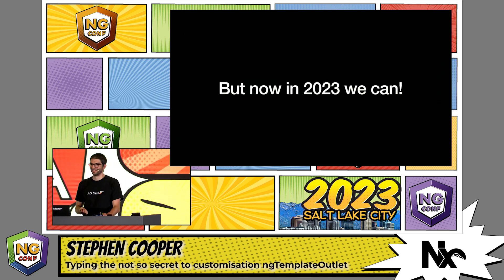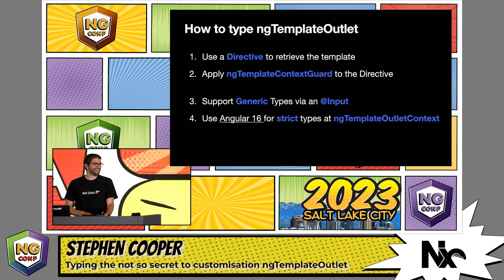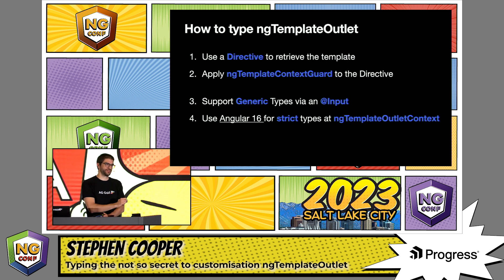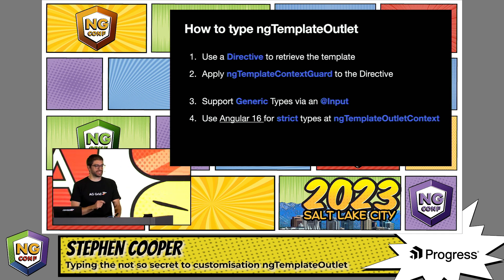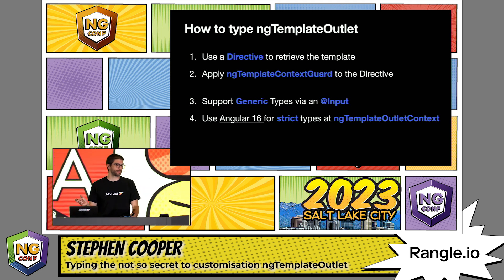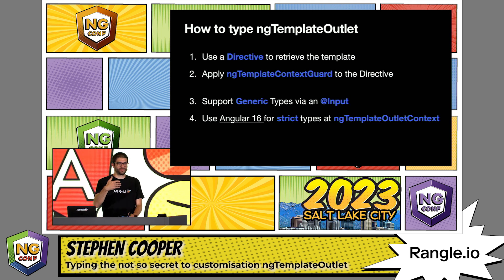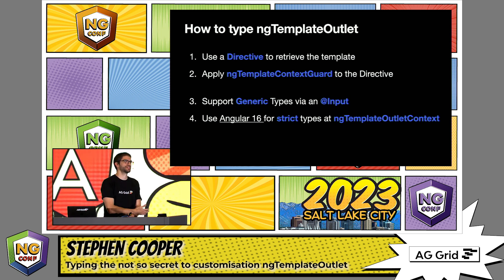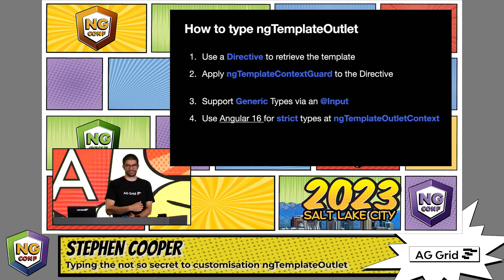But now in 2023 we can — and also in 2022, it's not brand new. So this is how we're going to do it. Instead of using a label, we're going to use a directive to identify our templates. We're going to use an ngTemplateContextGuard — that's really the key thing to take away from this talk, that this thing exists and you can use it to type templates. And then we're going to look at a slightly more complicated use case of how you can use this with generic types, and finally why you should use Angular 16 for this as well.